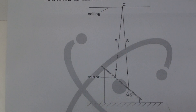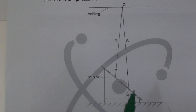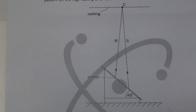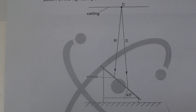The question asks us to continue rays R and S from point C on figure 3.1. We have to continue these rays after they strike the mirror, determine the angle of reflection, and then show how the image is formed.